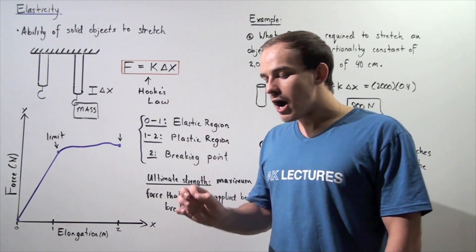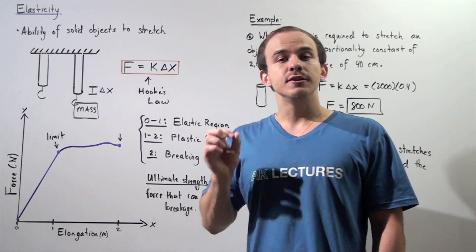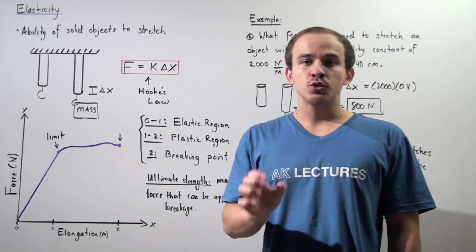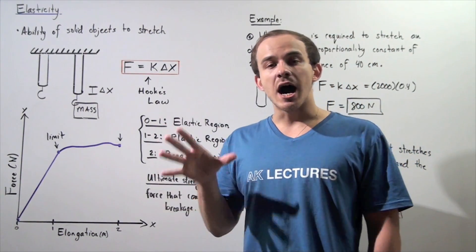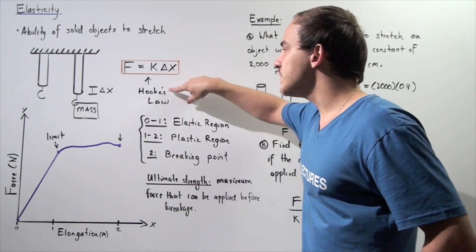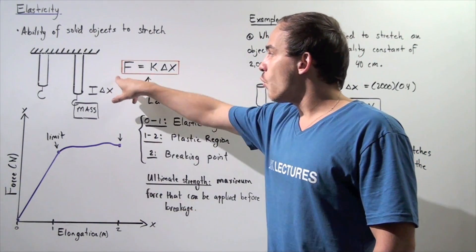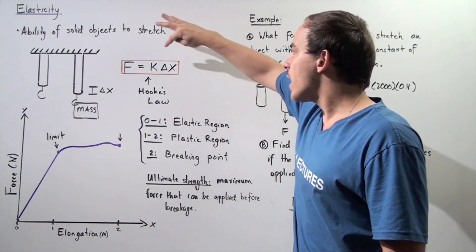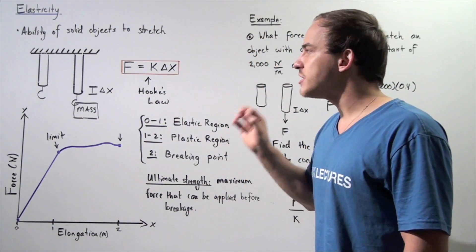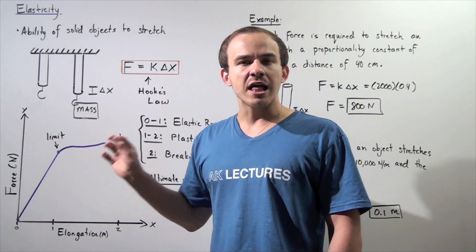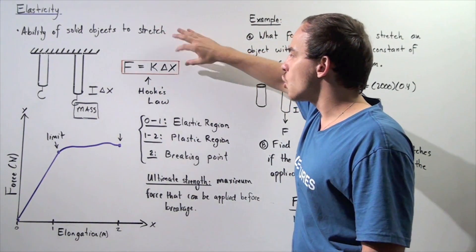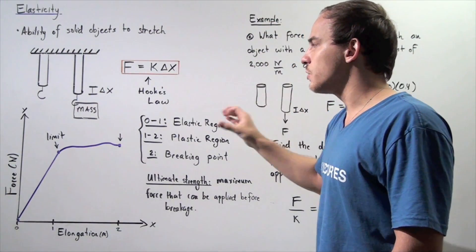Now the amount the object stretches depends on the force acting on the object. And the relationship between force and the amount the object stretches is given by Hooke's Law. So the force acting on the object that is stretching the object is equal to K, our proportionality constant, which depends on the type of solid being used, multiplied by the change in x, also known as the object's elongation.